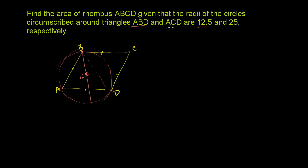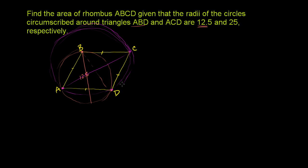The other circle is the circumcircle for triangle ACD — that's A, C, D. So let's draw a circle that can go through these three points. It looks like it would have to be a somewhat bigger circle, and that gels with the information they gave us. They're telling us that the radius is 12.5 — actually, I should be very careful: they're saying the radius is 12.5, not the diameter.